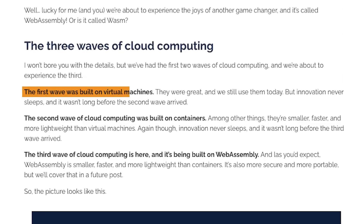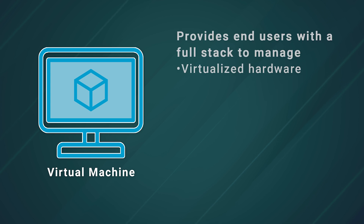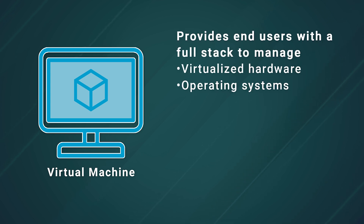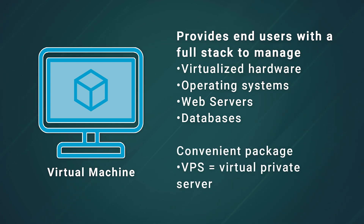First came the virtual machines. This was the industry's initial pass at democratizing the cloud. Virtual machines provide end users with a full stack to manage, from virtualized hardware to the operating system, web server to the database, and any applications that might sit in the middle. This was marketed as a convenient package — the VPS, or virtual private server. And for a time, if your business needed to utilize the cloud, you'd use a VPS.